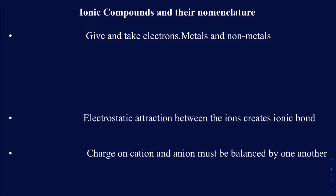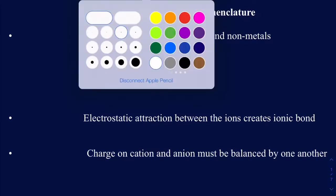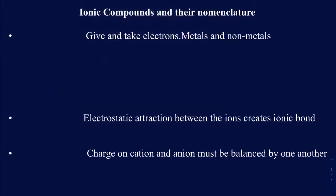Ionic compounds entail the give and take of electrons. What that really means: if I have a metal, metals like to give up electrons. So when a metal gives up electrons, they make a positive charge — cations.